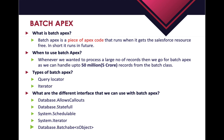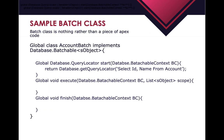The database.batchable interface is responsible for creating a Batch Apex class. Here is a very simple skeleton or blueprint of a Batch Apex. The class is declared as global because the interface we are implementing - database.batchable - is itself defined as global. This is the reason we have to make our access modifier global.